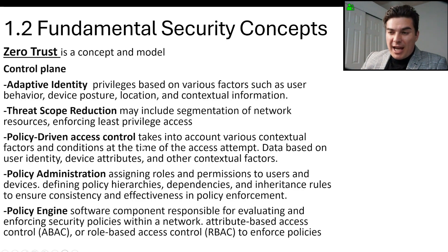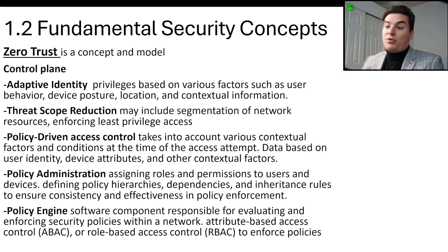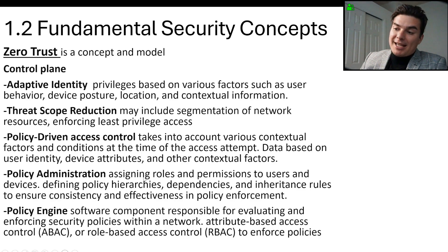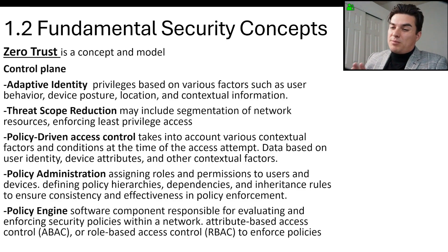With policy-driven access control, you look at why people should have access to certain information. The administration piece involves assigning those roles — for example, this group is in HR, this group is in finance, this group is in the mechanics department — and you're defining those policies and administration for each.